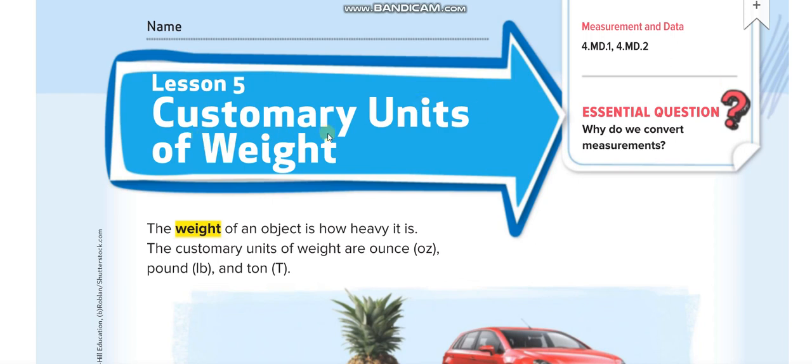As you know, we are taking customary units. Customary units are the British system of measurements. Weight is the weight of an object, or how heavy it is.